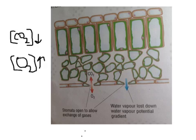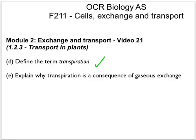Third, stomata are usually found on the underside of the leaf, away from direct sunlight, which reduces the heating effect and therefore reduces evaporation. Finally, deciduous plants lose their leaves in winter when the ground is frozen and water is less available — dropping their leaves prevents continuous transpiration. This isn't a problem because winter temperatures are usually too cold for photosynthesis anyway. In summary, transpiration is a consequence of gaseous exchange because stomata must stay open to allow CO₂ in and O₂ out.